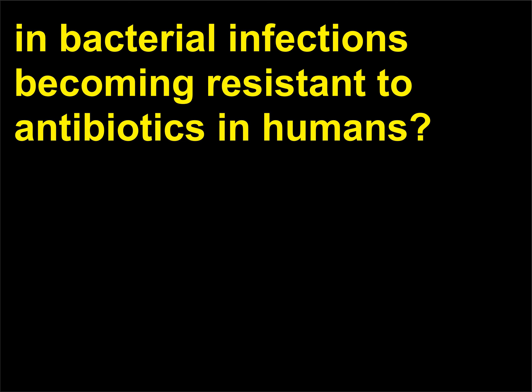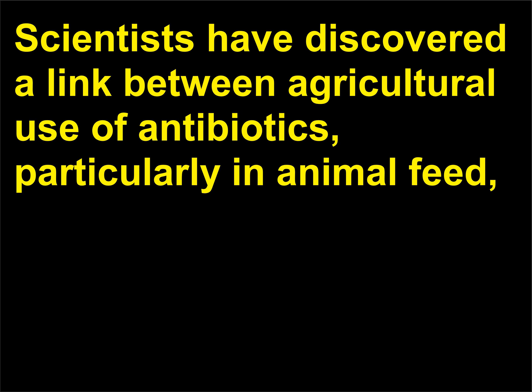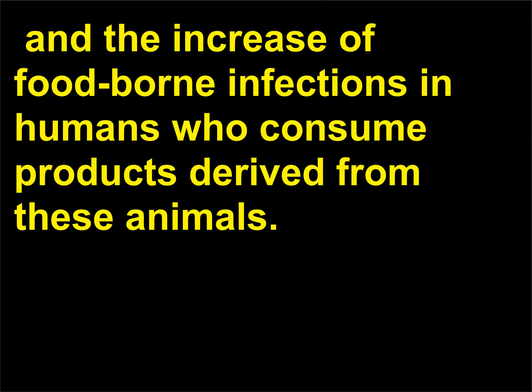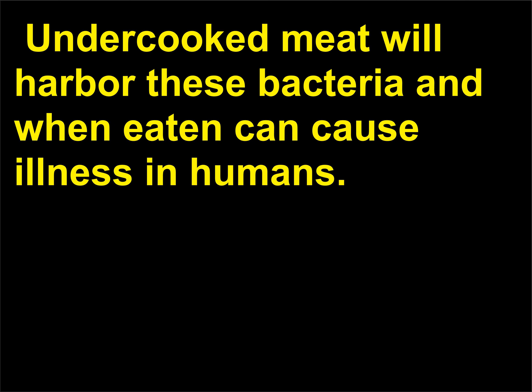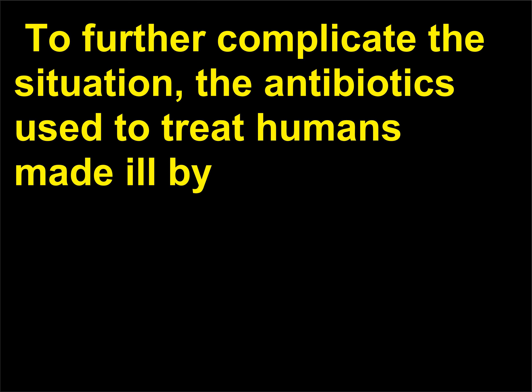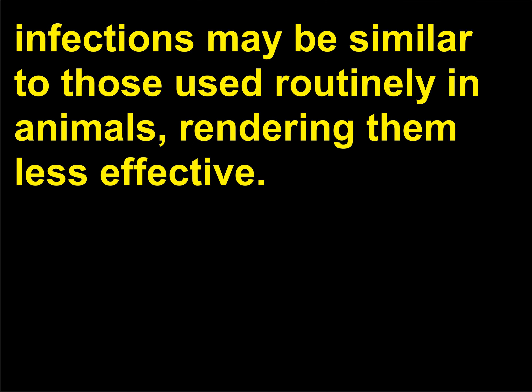Is there a link between antibiotic use in animal feed and the increase of foodborne infections in humans? Scientists have discovered a link between agricultural use of antibiotics, particularly in animal feed, and the increase of foodborne infections in humans who consume products derived from these animals. Resistant bacteria present in animals can survive the slaughtering and meat packaging process. Undercooked meat will harbor these bacteria and when eaten can cause illness in humans. The antibiotics used to treat humans made ill by these infections may be similar to those used routinely in animals, rendering them less effective.